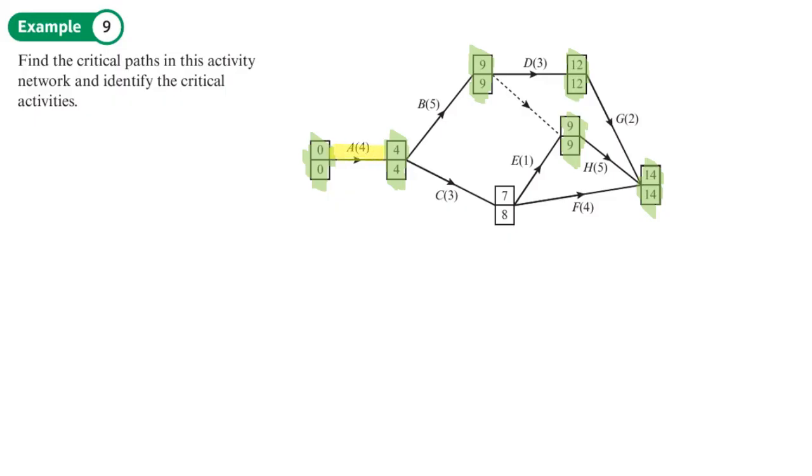So the difference between 0 and 4 is 4. The difference between four and nine is five, so that's critical. The difference between nine and 12 is three. Now here we've got a dummy activity, so that's zero. So that's part of the critical path. Then over here, the difference between 12 and 14 is two, so that's part of it as well. And then nine plus five is 14, so that's part of it as well.